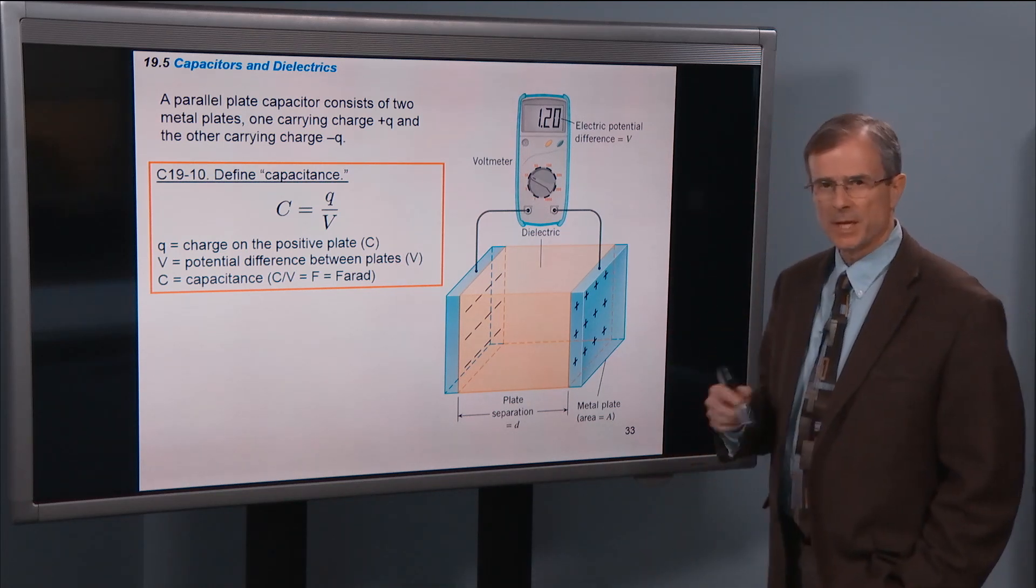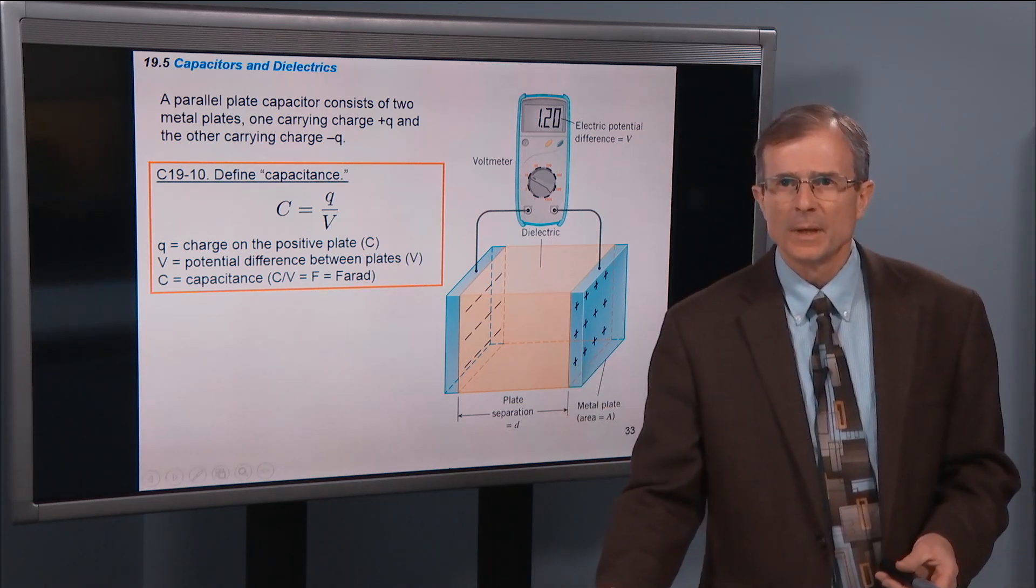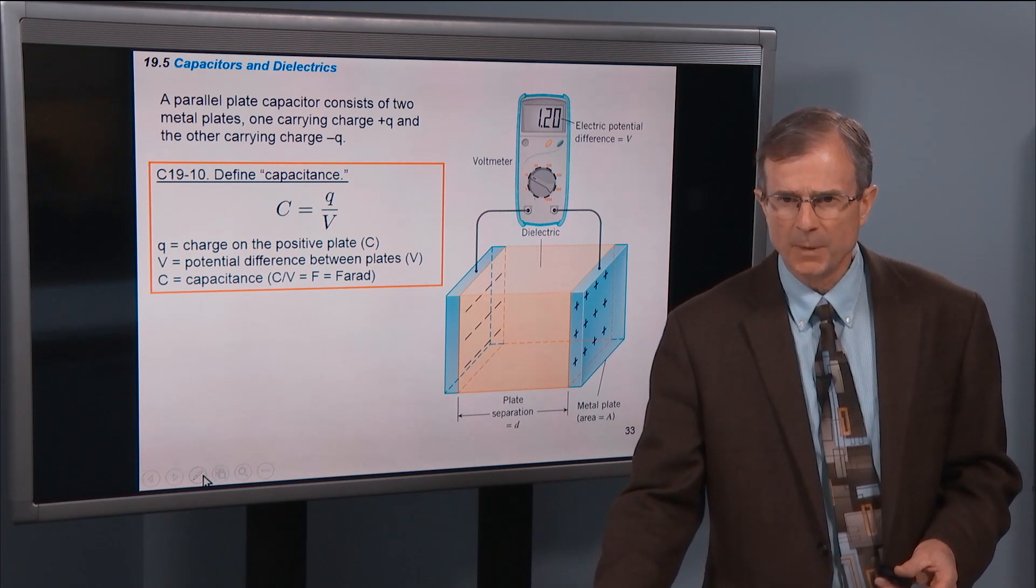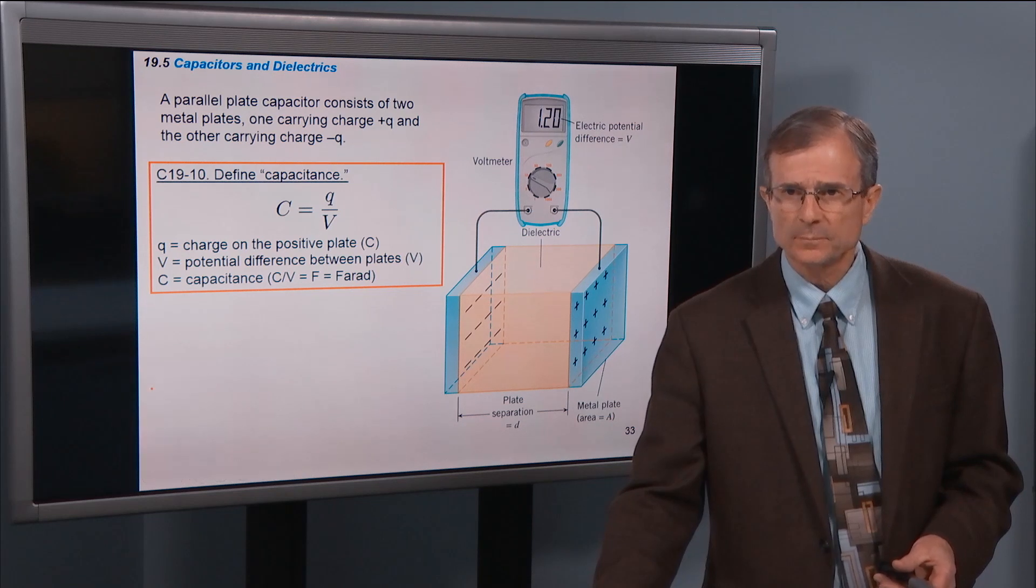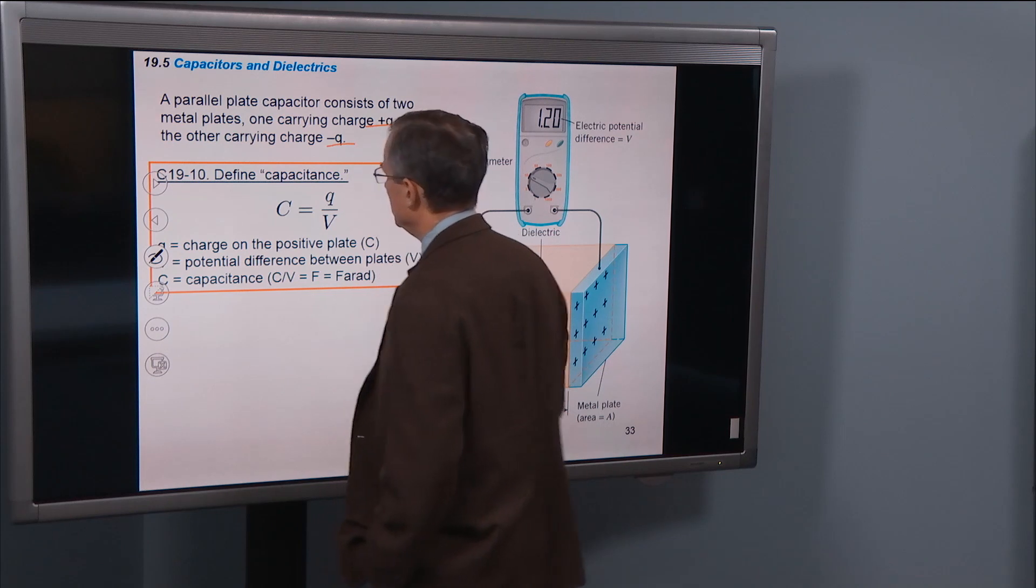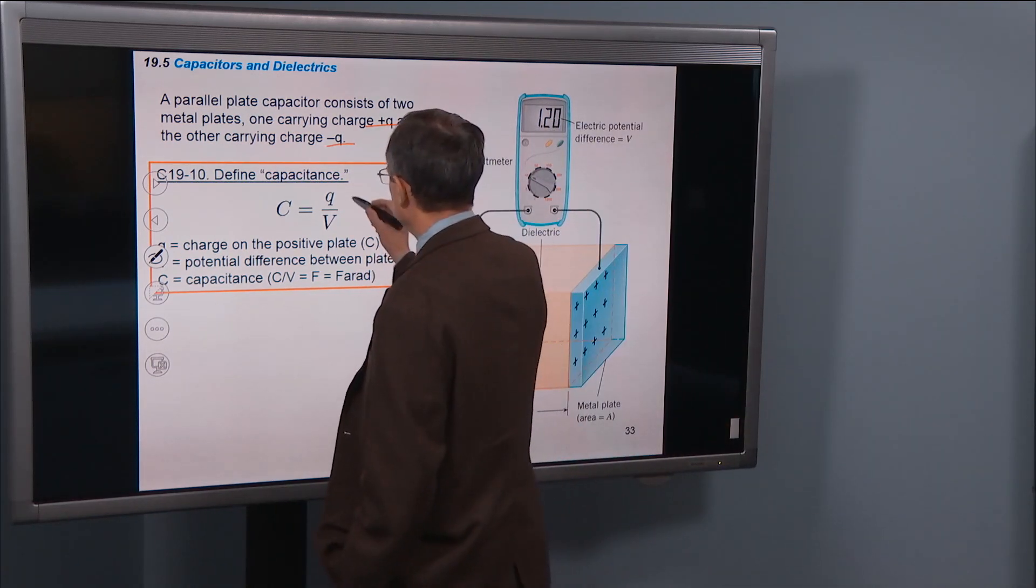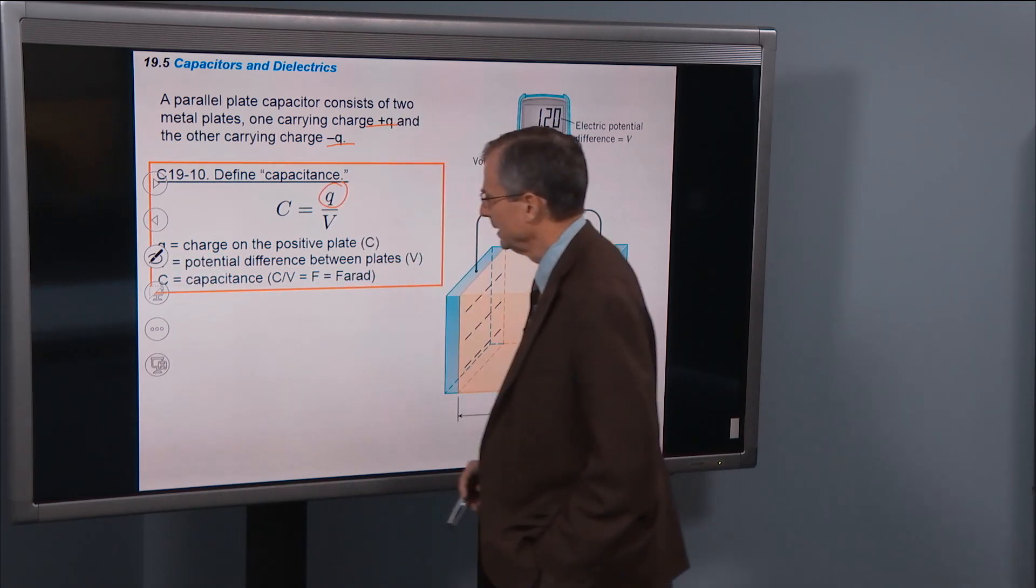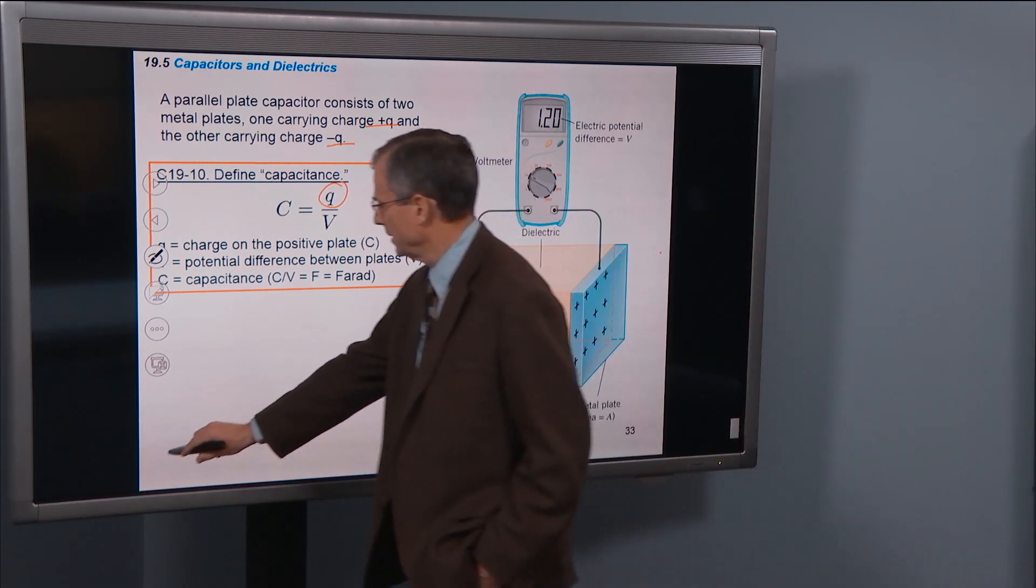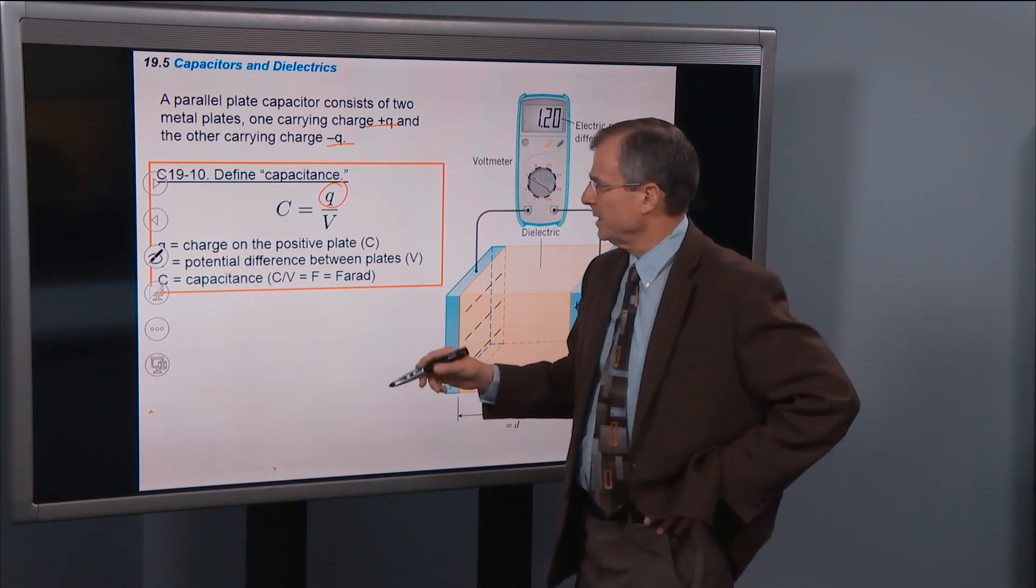A parallel plate capacitor, as discussed in the demo videos, consists of two metal plates. One carrying charge plus Q, and the other carrying charge minus Q. So an opposite charge. So we've got a plus Q and a minus Q. And the capacitance is defined as the charge on the positive plate. And that's a Q right here. So the charge on the positive plate is Q.